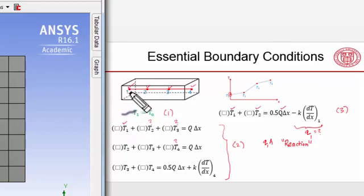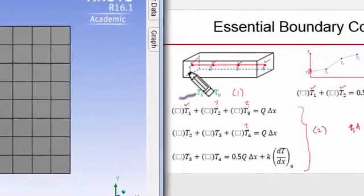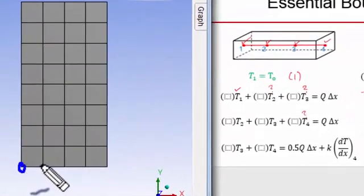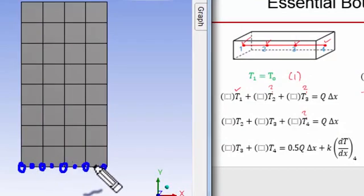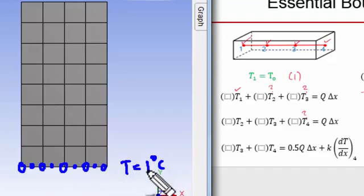We have the corner nodes here and also the mid-side nodes. It will assign the temperature boundary condition for these nine values, so the temperature will be set to 1°C. You can see that the essential boundary condition will be satisfied exactly.